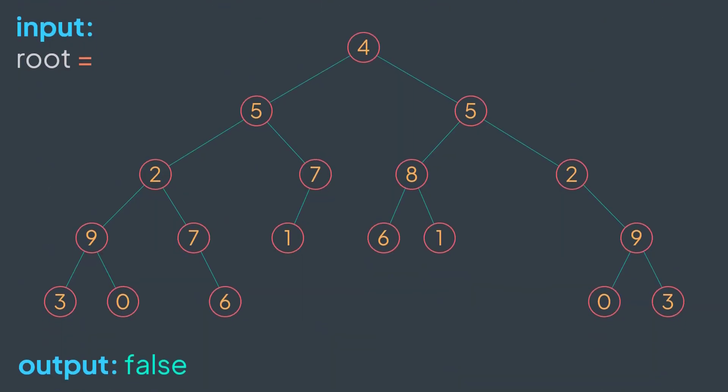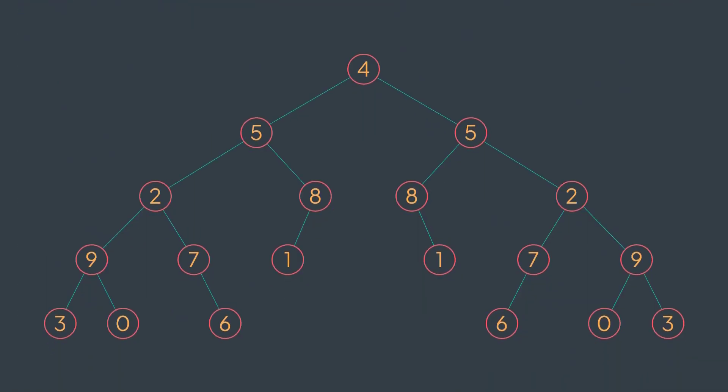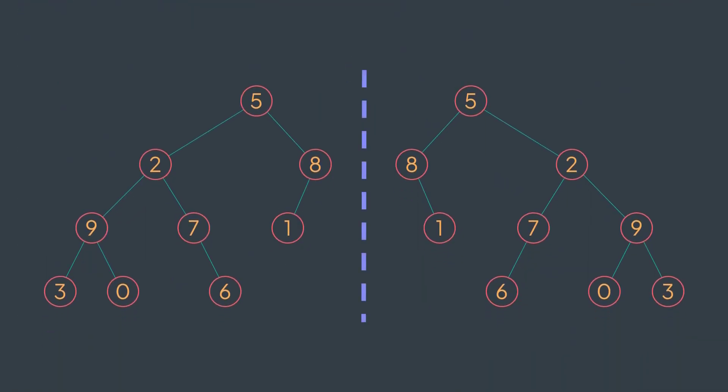But this one is not symmetric. For example, if we reverse its left part, we don't get the right part. How to solve this problem: to check if a tree is symmetric, what we really need to check is that the left and right subtrees are symmetric to each other — we will focus on that.